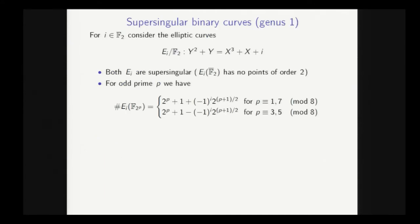So what are supersingular curves? Well, a supersingular elliptic curve is just one which, if it's in characteristic p, has no points of order p over an algebraic closure. And more generally, a supersingular curve of higher genus is just one whose Jacobian is isogenous to a product of supersingular elliptic curves.